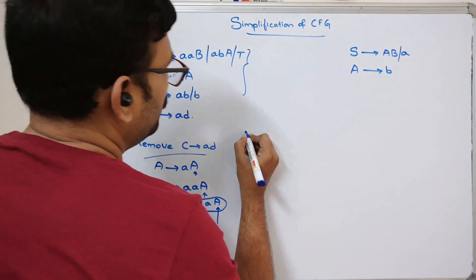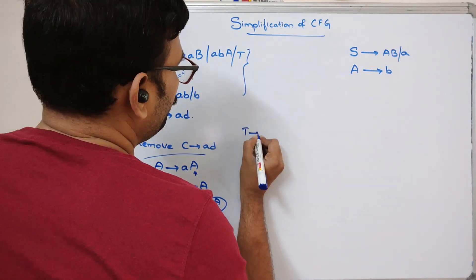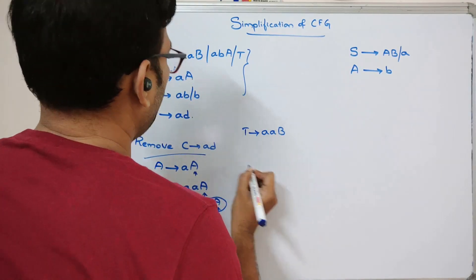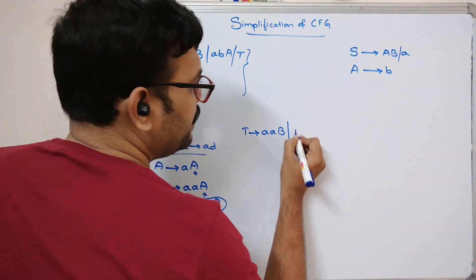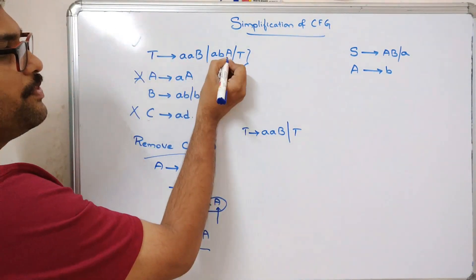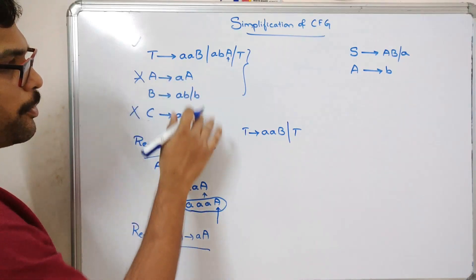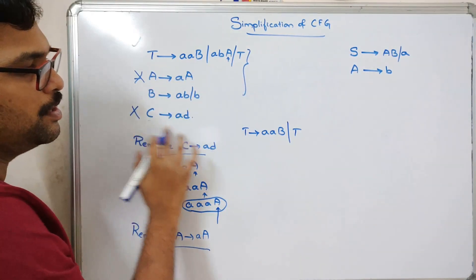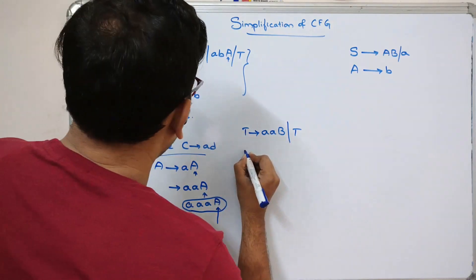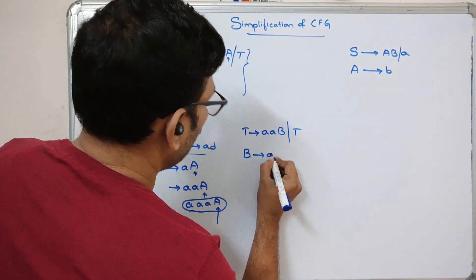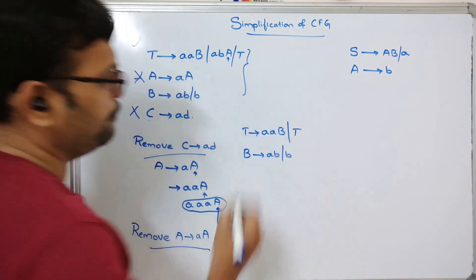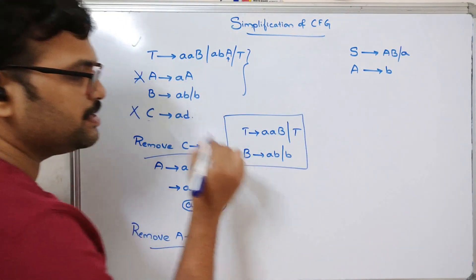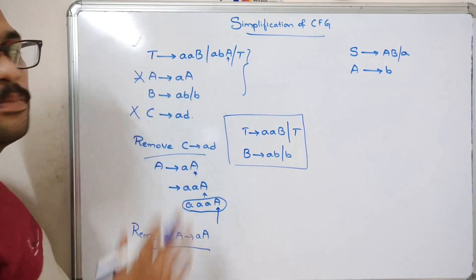After minimizing, the resultant will be: A, A, B, and T. We need to remove the A-related productions since there is no terminal for A. So simply remove that and keep B tends to AB and B. This is the simplified CFG for this example.